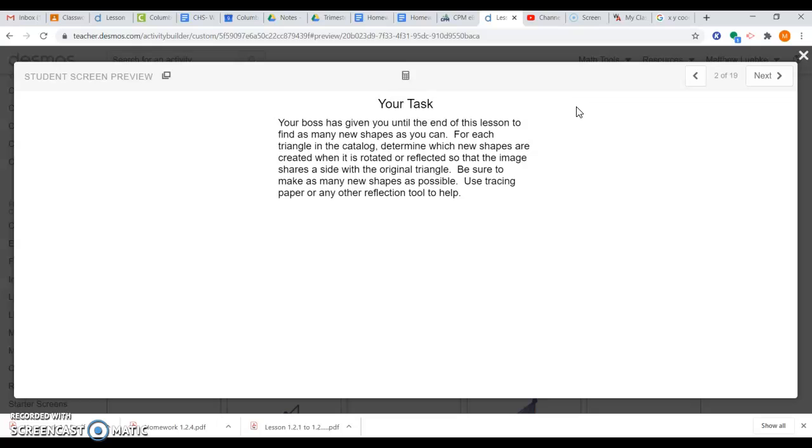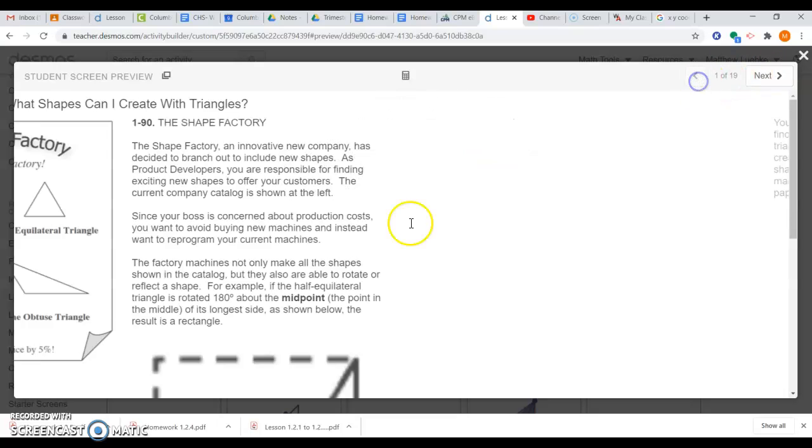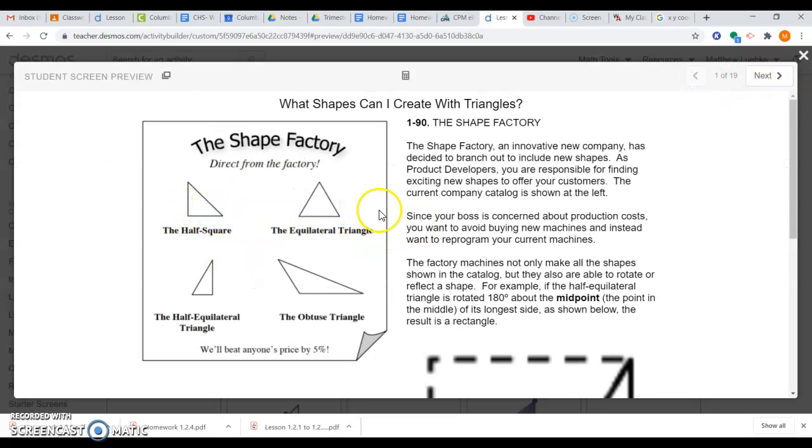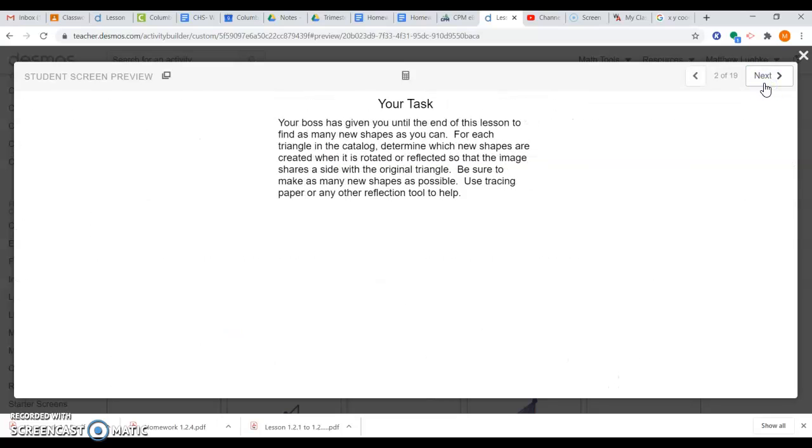We need to list them as we go, and then we're going to create a long list at the end of all the ones we created. The first one is going to be the first shape in the catalog, which I believe is the half square. So I'm going to show you a lot on how we can do these with that half square, but I'm going to leave a lot for you.